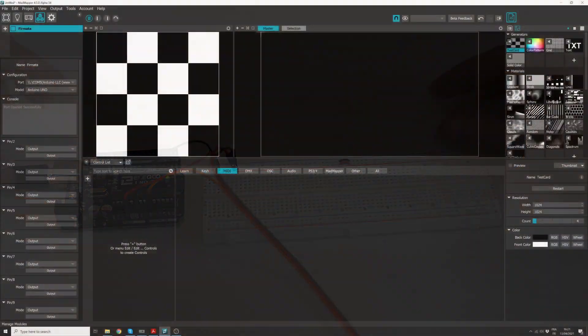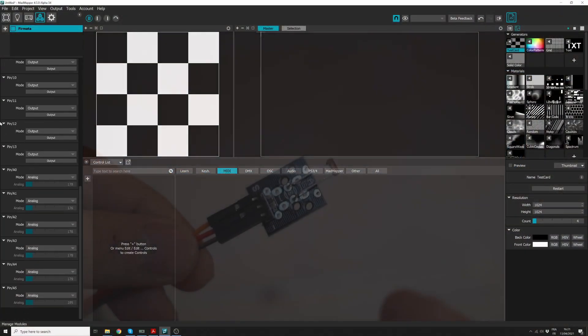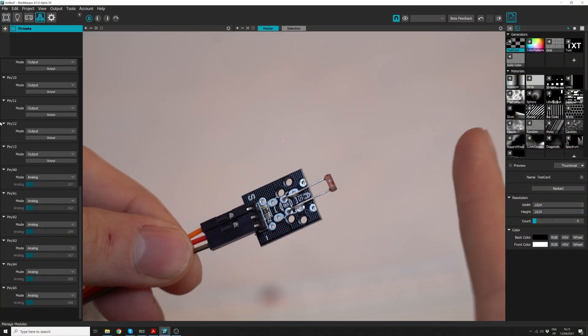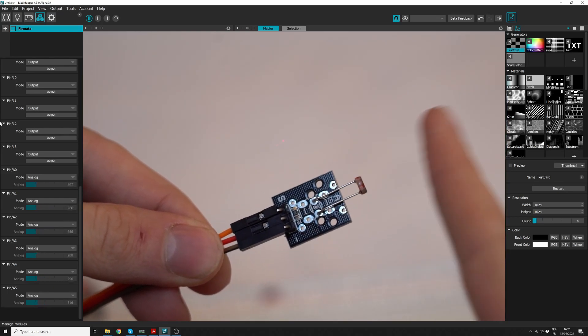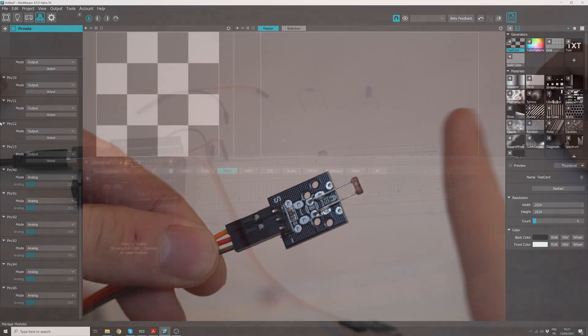In MadMapper, at the bottom, you should see the analog pins reacting when covering the light sensor. We can also link an LED to this sensor.